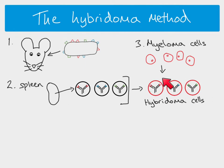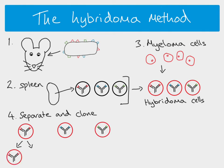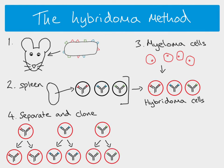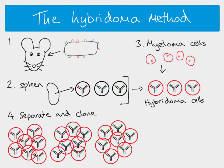Of course we've still got lots of them and we don't know which one we want — we don't know which cells are producing which antibody. So what we do is separate all of the cells out and clone them. Each of our hybridoma cells begins the process of division, making lots of clones of itself, and eventually we end up with large numbers of cloned cells. These are separated out on a dish so we can see each individual clump, and we know all the cells in a clump are identical to one another and are therefore producing the same kind of antibody.